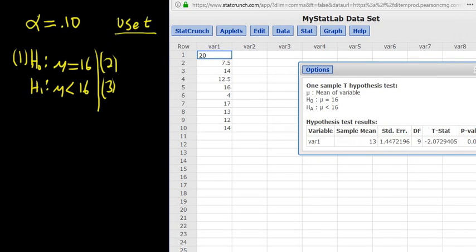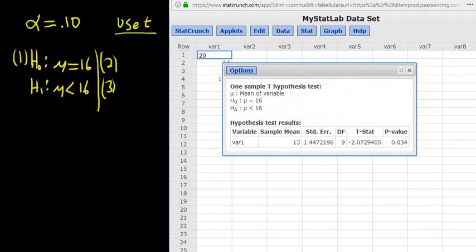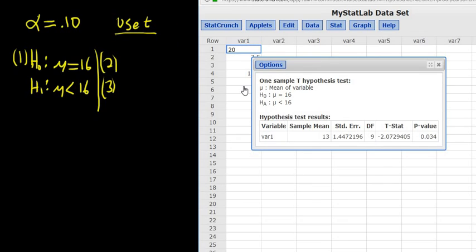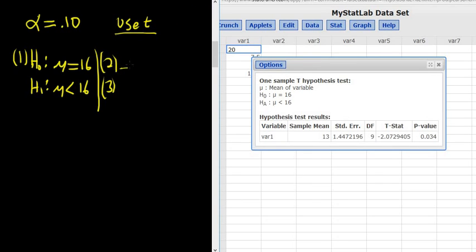And now we have our test statistic and our p-value. So our test statistic in this problem is negative 2.07. That's our t. So t is equal to that.